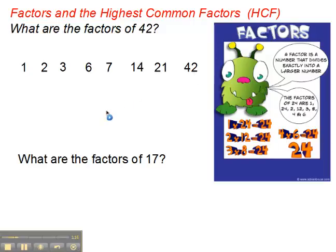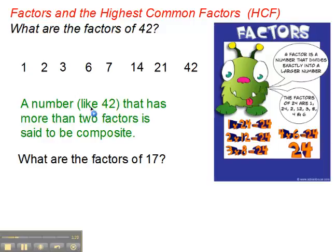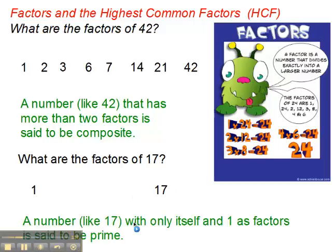Numbers like that, which have more than 2 factors, are said to be composite. So 42 is composite. However, a number like 17 — 1 and 17, the number 1 and the number itself are factors, but any other numbers between 2 and 17 won't divide into 17, so those are the only two factors. A number like that is said to be a prime number.